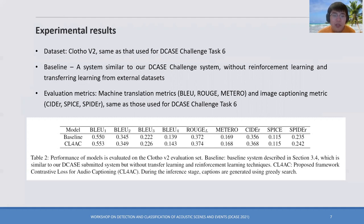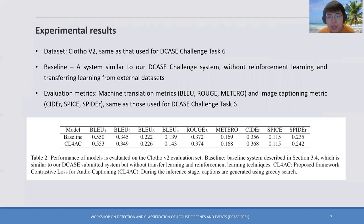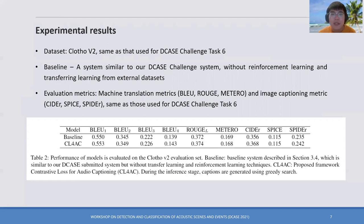For evaluation metrics, we use the same metrics as the DCASE Challenge, including machine translation metrics BLEU and METEOR, and image captioning metrics CIDEr, SPICE, and SPIDEr. The results show improvement across both machine translation and image captioning metrics, demonstrating the effectiveness of CL4AC when trained with limited data.